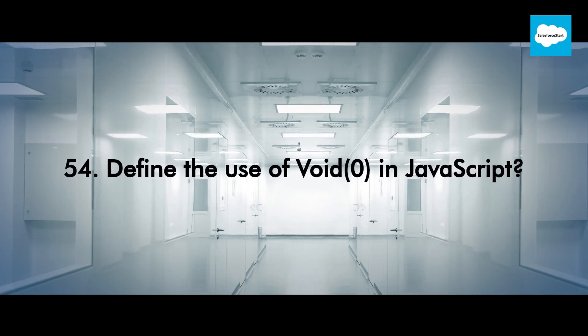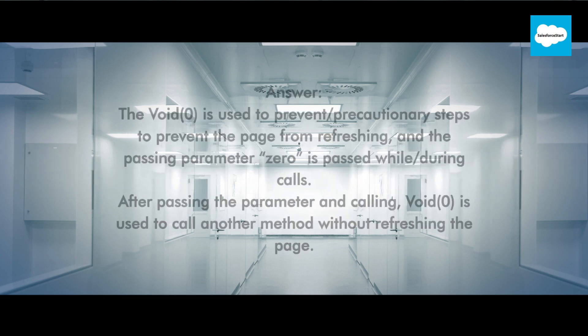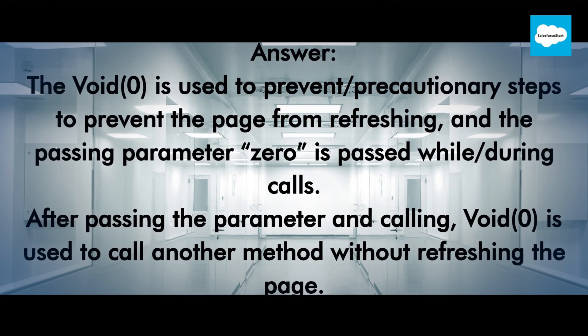Define the use of void 0 in JavaScript. The void 0 is used as a precautionary step to prevent the page from refreshing, and the parameter 0 is passed during calls. After passing the parameter, void 0 is used to call another method without refreshing the page.